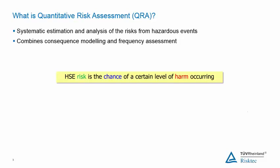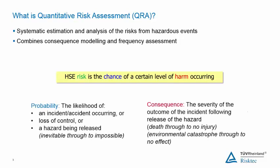Health, safety, and environmental risk is defined as the chance — the probability — of a certain level of harm, a consequence, occurring. In other words, risk equals the probability of an event occurring multiplied by the event consequence.